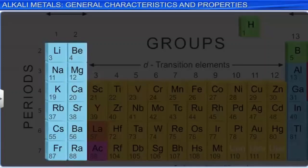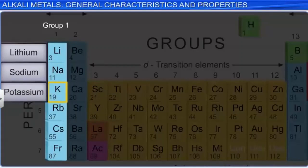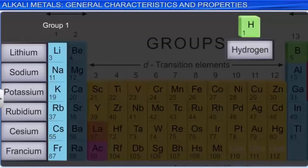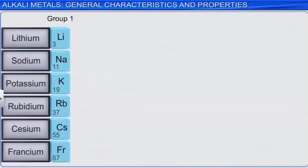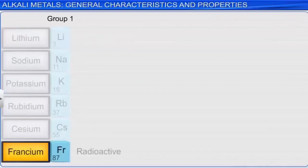The metals in group 1 include lithium, sodium, potassium, rubidium, cesium, and francium. Note that hydrogen is not included here as it typically does not exhibit metallic behavior. Lithium is the most abundant member of the family. Francium is radioactive, and its longest-lived isotope has a half-life of only 21 minutes.